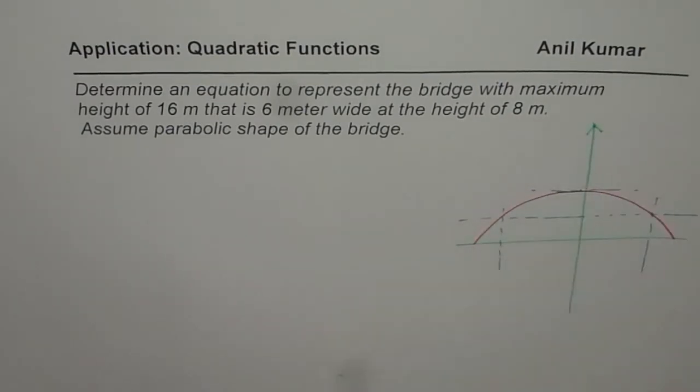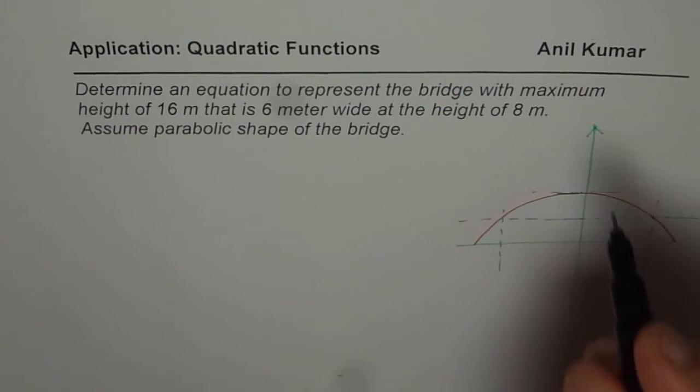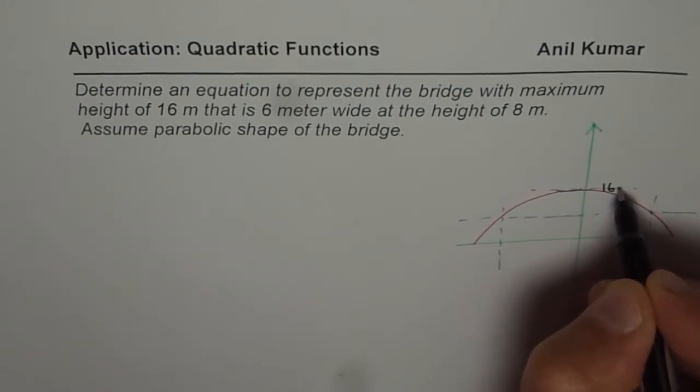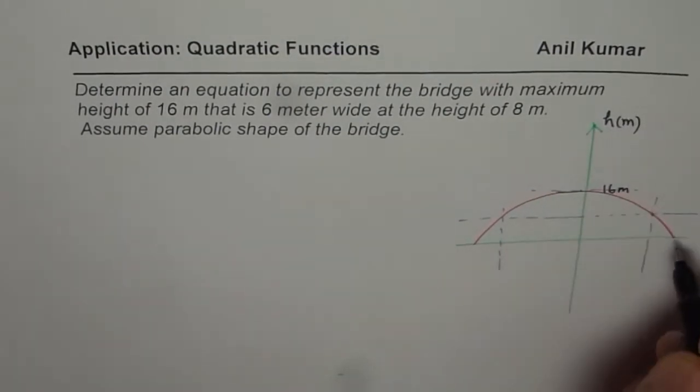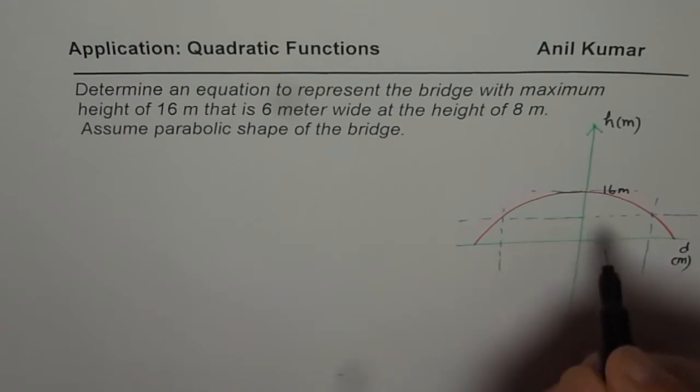So I am taking the axis along the vertex and now it becomes kind of simpler for me. So what I have here is 16 meters. So I am saying this is height in meters. And that is distance in meters.